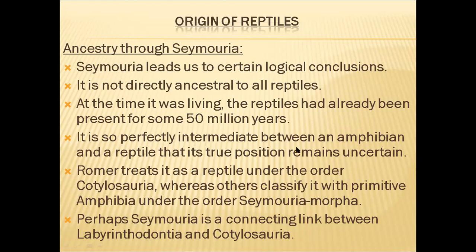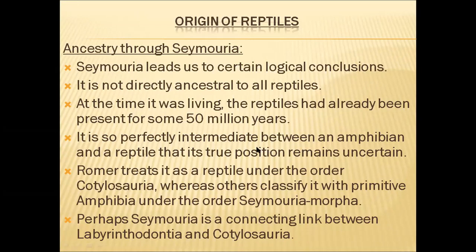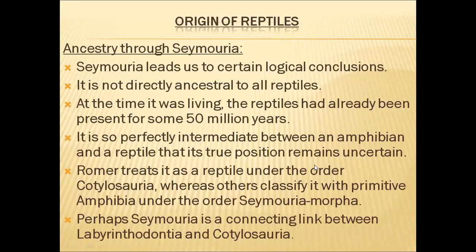Seymoria is so perfectly intermediate between an amphibian and a reptile that its true position remains uncertain. Scientist Romer treated Seymoria as a reptile under order Cotylosauria, whereas other scientists classified it with primitive amphibians under the Seymouriamorpha group. Seymoria is considered a connecting link between Labyrinthodontia and Cotylosauria.